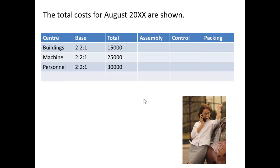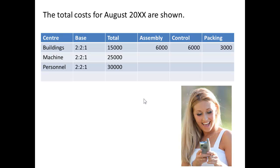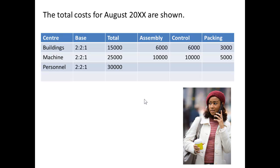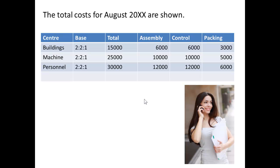The total costs to apportion using the 2 to 2 to 1 ratio are: buildings £15,000, machines £25,000, and personnel £30,000. Apportioning buildings gives £6,000 to assembly, £6,000 to quality control, and £3,000 to packing. For machines: £10,000 to assembly, £10,000 to quality control, and £5,000 to packing. For personnel: £12,000 to assembly, £12,000 to quality control, and £6,000 to packing.